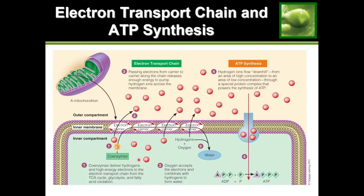What we want is for the hydrogens that were dumped into the inner compartment to actually move to the outer compartment, because if they come down using this pump, that actually generates ATP. So the coenzymes deliver hydrogens and electrons to the electron transport chain, they are dumped into the inner compartment, but we want the hydrogens to move to the outer compartment so they can come down using this pump and generate ATP.